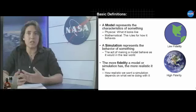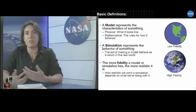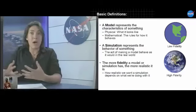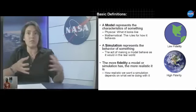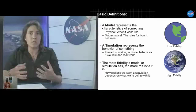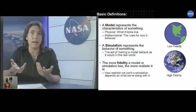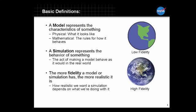A simulation is when we actually push the play button on the model we've put together. We can take mathematical models, put in a bunch of numbers, push play and see what happens. We can take physical models and see how they move and interact with each other, or we can do a combination of both. The difference between a model and a simulation is that the model is the static thing, while the simulation is the action and what's actually moving around. Another term we talk about a lot with modeling and simulation is fidelity — which is a fancy way of saying how accurate something is.